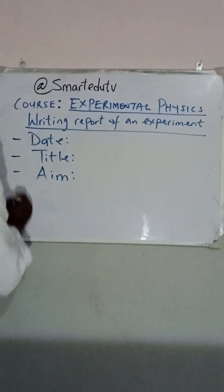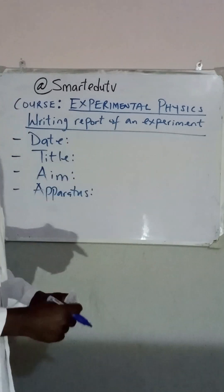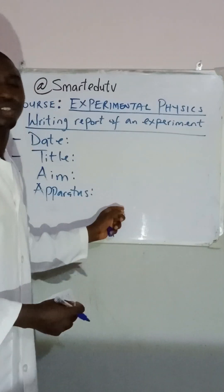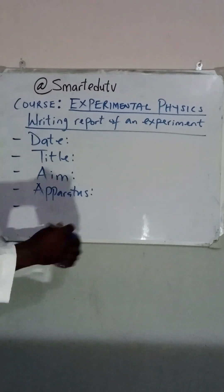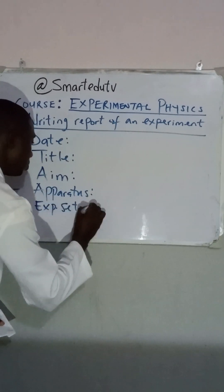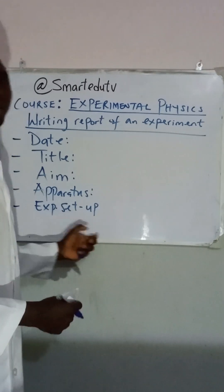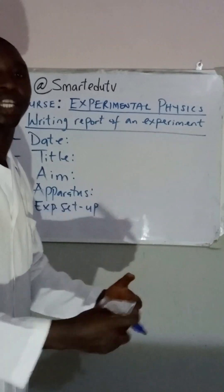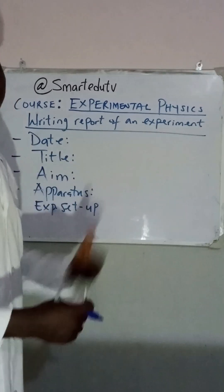The next thing we must include in our report is the apparatus. This is very important. Every experiment has its own unique apparatus — these are the instruments that were used in carrying out the experiment. After writing the apparatus, the next thing is to draw the diagram, or the experimental setup, if there is any. Just a small sketch that shows how the experiments are being carried out — a simple diagram. It doesn't need any painting, just a simple diagram to show how the experiment is set up.